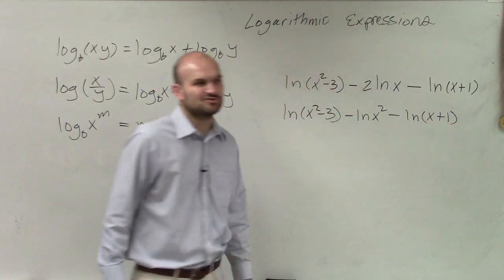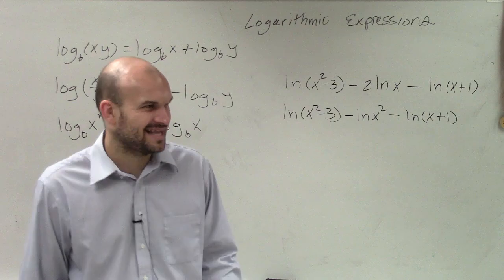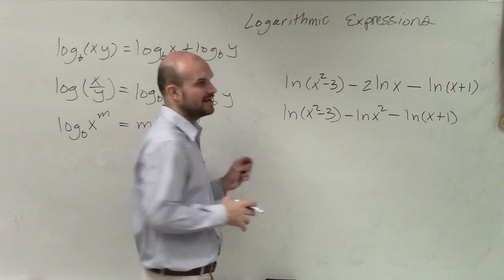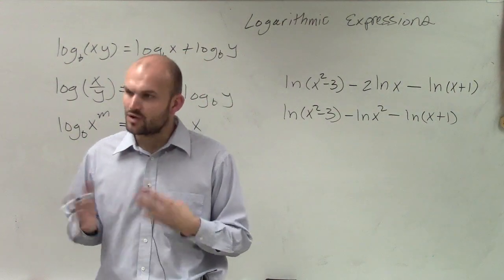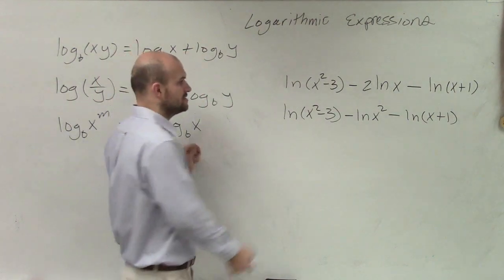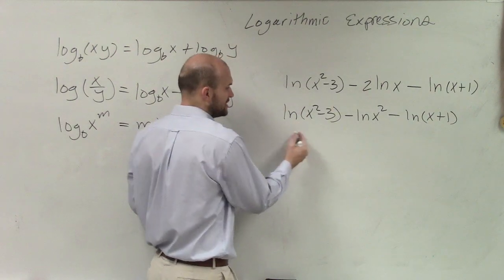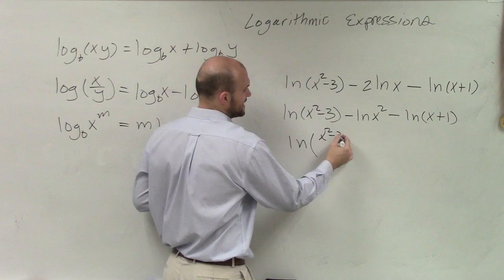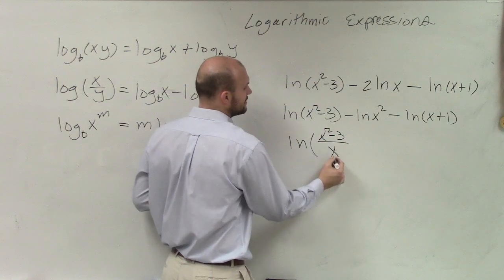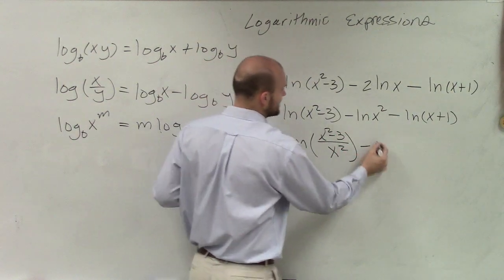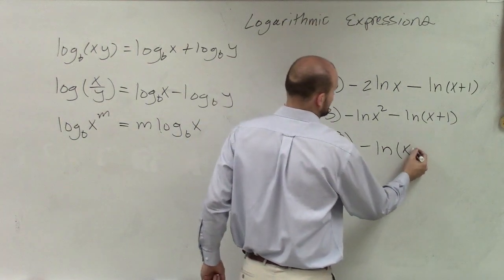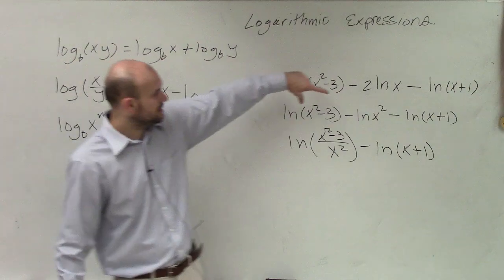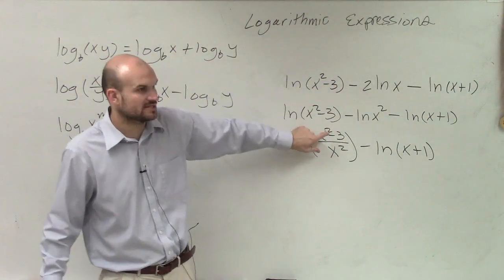So when we see that subtraction, what is that subtraction telling us? We need to do division, right? So let's just kind of work at this one at a time from left to right. So if I was going to combine these by division, I could say that's the same thing as ln of x squared minus 3 divided by x squared minus ln of x plus 1. Would everybody agree with me the way that I wrote my subtraction into one single logarithm?